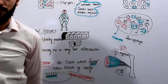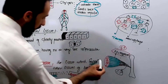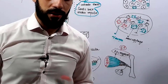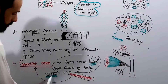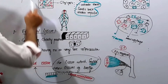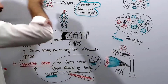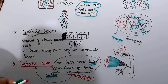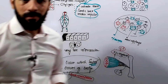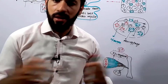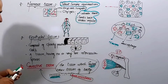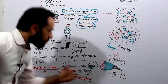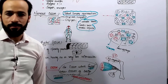So wherever epithelial, nervous, and muscular tissues are present in your body, connective tissue will also be present. In fact, the most abundant tissue in your body is connective tissue. Below the epithelial tissue, around the muscular tissue, and inside the nervous tissue — connective tissue is present around any other tissue in your body. That is why we define it as the tissue which supports other tissues.